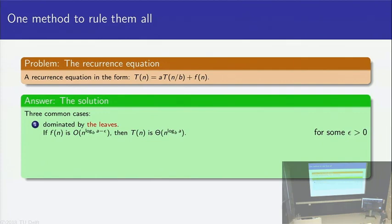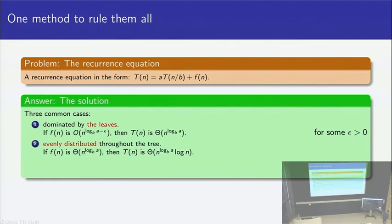Alternatively, the work was evenly spread. So the work in combining the solutions is just as much work as the work in our tree or in our leaves. In that case, well we need to do both, so we have to include the height of our tree in this expression as well, so we include a log n factor.